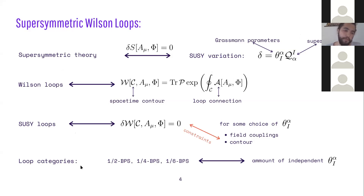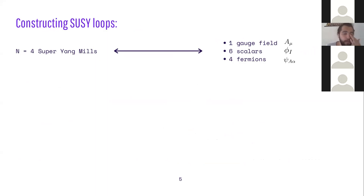It is usual to categorize Wilson loops by the amount of supersymmetry they preserve. Half-BPS solutions preserve half of the total supercharges, 1/4-BPS preserve one quarter, and so on.